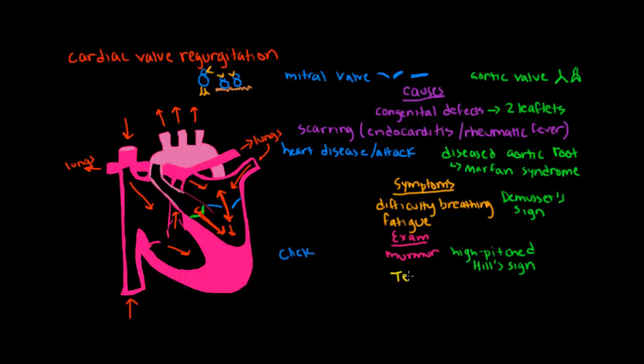In order to make a definitive diagnosis, more testing is warranted. A clinician may order an electrocardiogram. An electrocardiogram, also known as an EKG, measures the electrical signal of the heart. However, this is not very specific for mitral or aortic valve regurgitation.